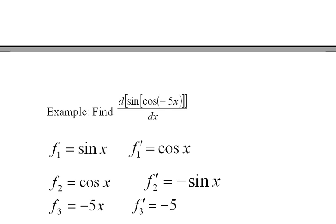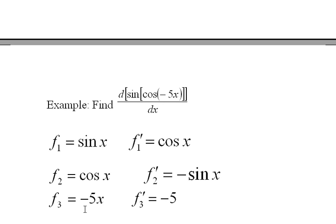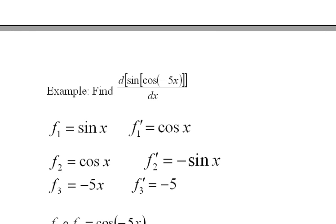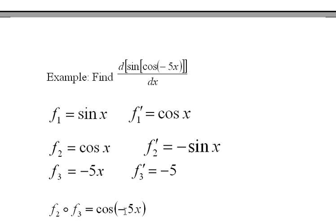I'm going to list all three functions as f1, f2, and f3. And here's f1 prime, f2 prime, and f3 prime. And then just as a helpful reminder, f2 of f3 is cosine of negative 5x.